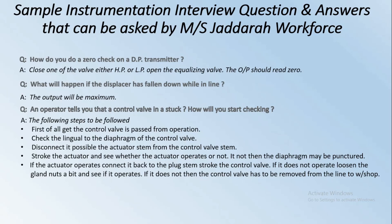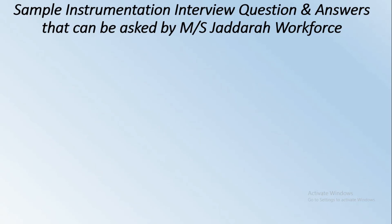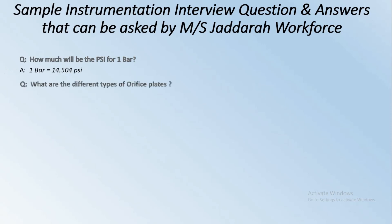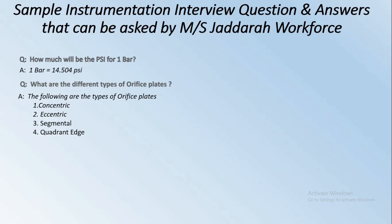If the control valve does not operate, loosen the gland nuts a bit and see if it operates. If it still does not, the control valve has to be removed from the line and sent to the workshop. Next: How much is one bar in PSI? One bar equals 14.504 PSI. The types of orifice plates are: concentric, eccentric, segmental, and quadrant edge.